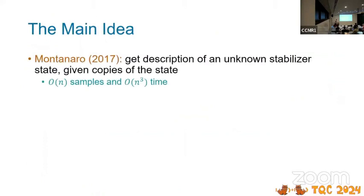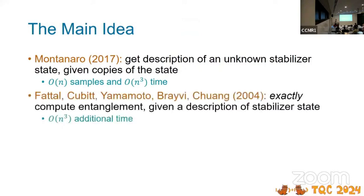So what's the main idea? If you know things about learning stabilizer states, you might know that in 2017, Montanaro gave this algorithm to find the description of an unknown stabilizer state given copies of the state. A stabilizer state is basically a state produced by zero non-Clifford gates.